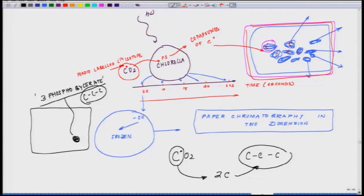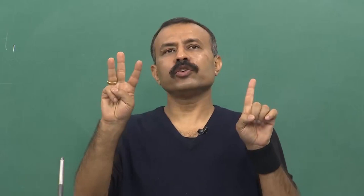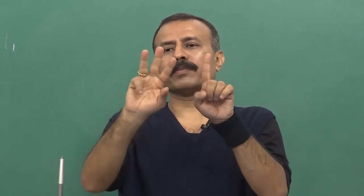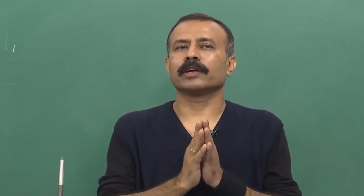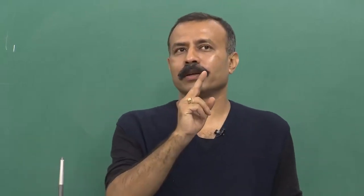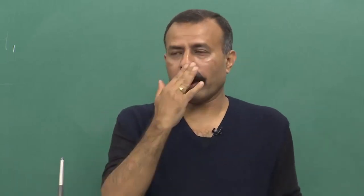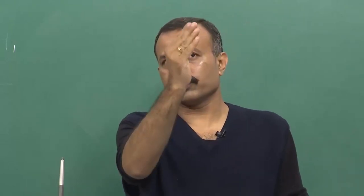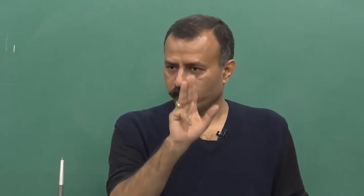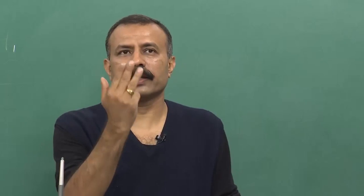3-phosphoglycerate is 3 carbons and you started with a 1-carbon molecule — CO2 — single carbon. So from 1 to 3 you have only 2 options. If this one carbon is coming here, you already have something which is 2-carbon and this one gets attached and forms a 3-carbon. That is the simplistic thought — this is how it should work. Interestingly, that is exactly not how it worked — to a big surprise. There was no 2-carbon substrate.